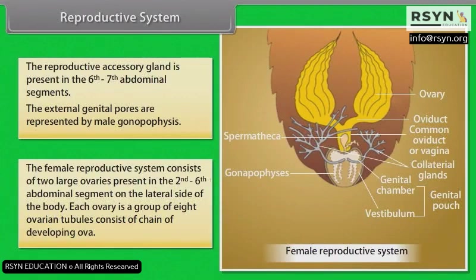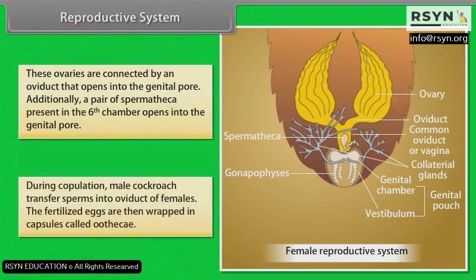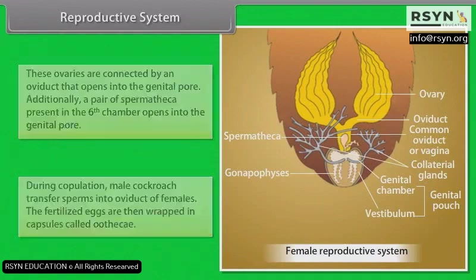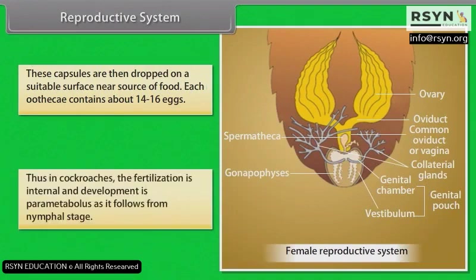The female reproductive system consists of two large ovaries present in the second to sixth abdominal segment. Each ovary is a group of eight ovarian tubules consisting of a chain of developing ova. The ovaries are connected by an oviduct opening into the genital pore. A pair of spermathecae present in the sixth chamber opens into the genital pore. During copulation, the male cockroach transfers sperms into the oviduct of females. The fertilized eggs are wrapped in capsules called oothecae, each containing about 14–16 eggs. Fertilization is internal and development is paurametabolous, following a nymphal state.